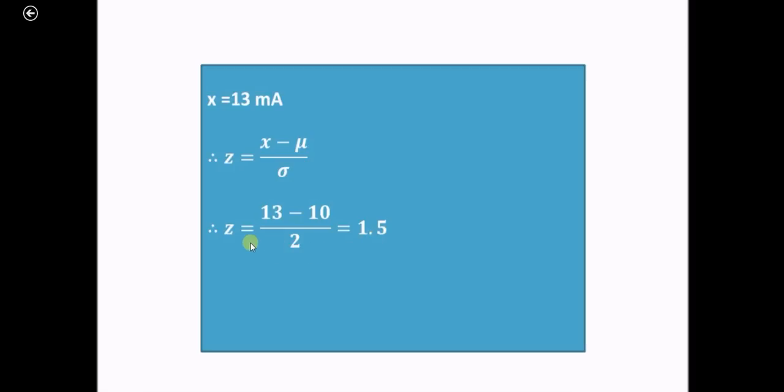Now we have to find out some probabilities. Suppose we have to find out the probability of x greater than 13. We know that corresponding to this x equal to 13 milliamperes, the value of z that we have calculated is 1.5. So it means that probability of x greater than 13 is the same as probability of z greater than 1.5.